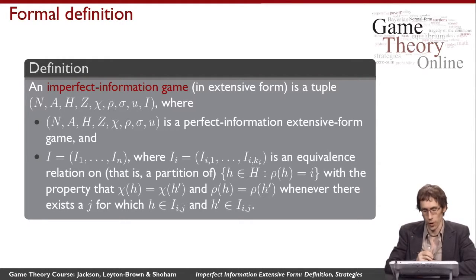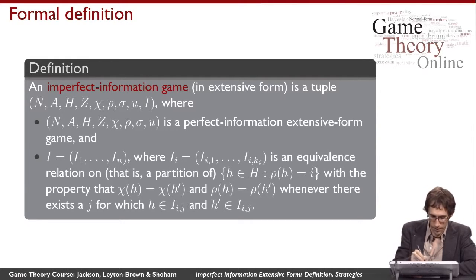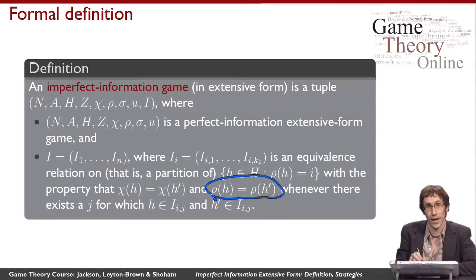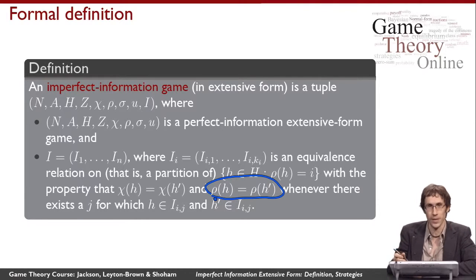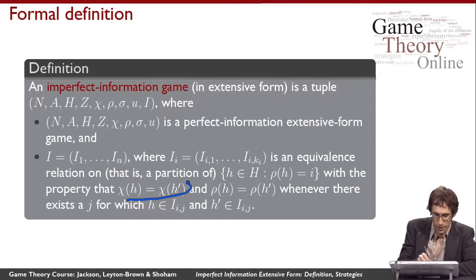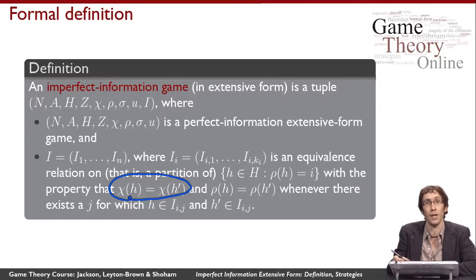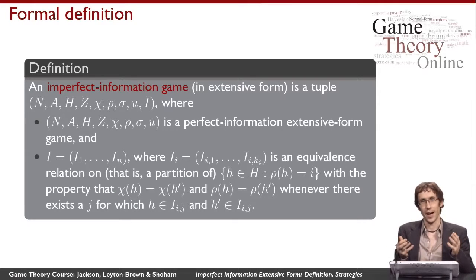To make this definition work, we need two restrictions. First, if two choice nodes are part of the same equivalence class, they must belong to the same player — if they didn't, you'd be able to tell them apart because different players would be acting. Second, the two choice nodes must have the same set of available actions, because if the player can't tell them apart, he still has to know what actions to take. Those are the only restrictions.